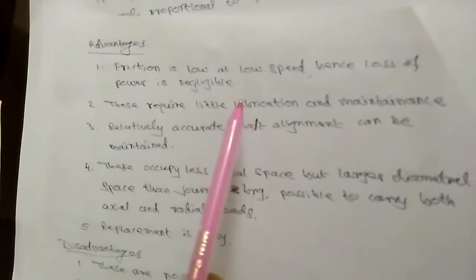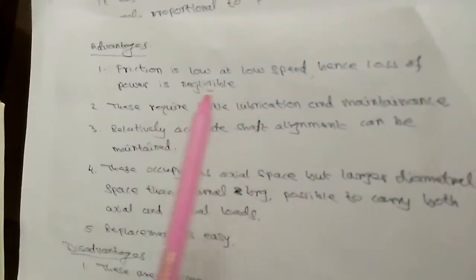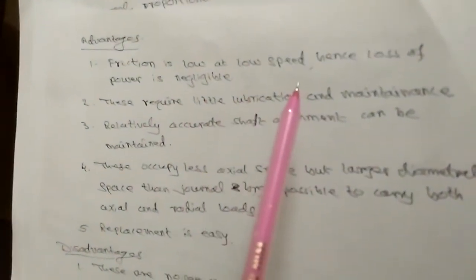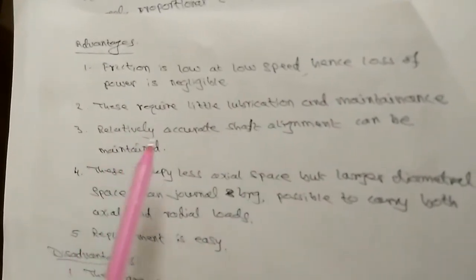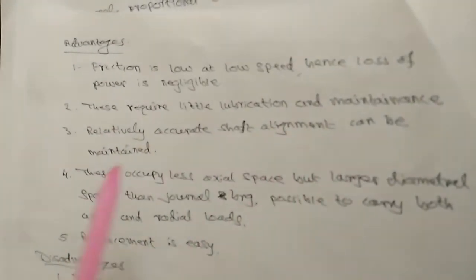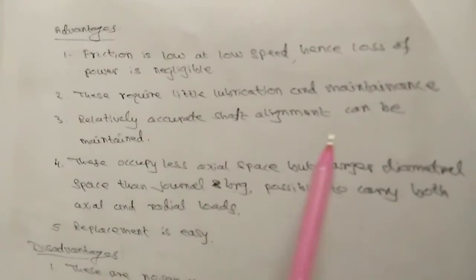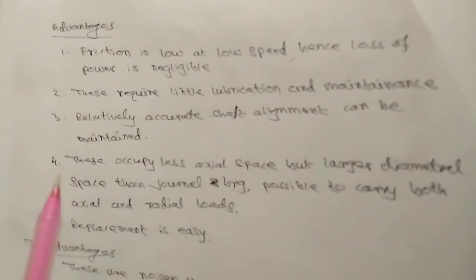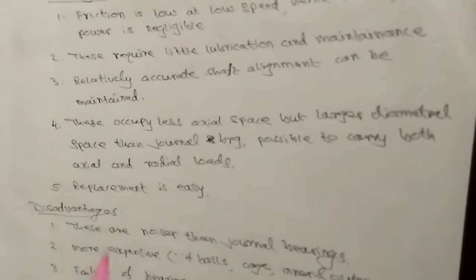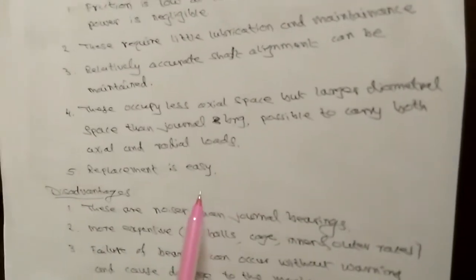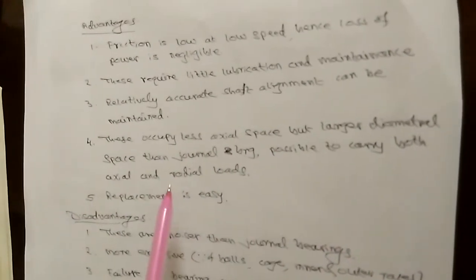The advantages of anti-friction bearings are: friction is low because of ball-point contact and line contact, so loss of power is negligible. These require little lubrication and maintenance. Relatively accurate shaft alignment can be maintained. They occupy less axial space but more diametral space. Replacement is easy. These are the five important advantages.